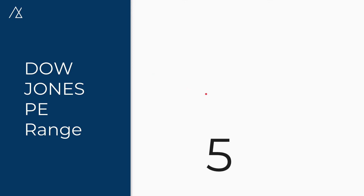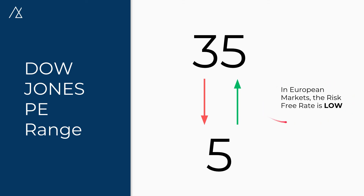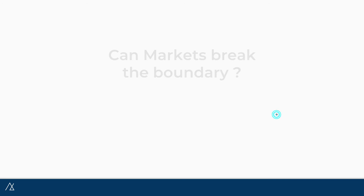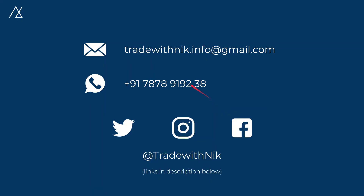One more question: do international markets also react with PE ratio? The answer is a big yes. The Dow Jones PE range is around 5 to 35. The reason is simple — the risk-free return there is very low compared to Asian markets, around 3 to 4% at max. Now, can this range be broken? Yes, it's possible, but what are the chances? It's like playing against the odds. Connect with us on any social media platform. Happy trading, safe trading, and peace out.